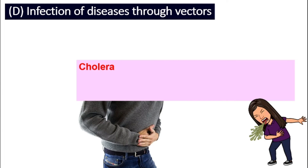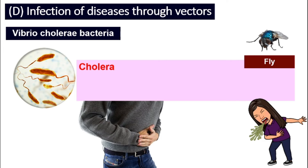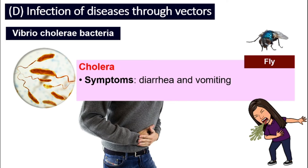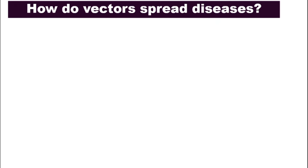Finally, cholera — the pathogen is Vibrio cholerae bacteria, and it is spread by flies. The vector is the animal, the bacteria is the pathogen — we need to be clear about these two terms. The pathogen is the bacteria or organism that actually causes the disease, while the vector is the animal that carries the pathogens. The symptoms of cholera are diarrhea and vomiting, and the way of infection is contaminated food and water.